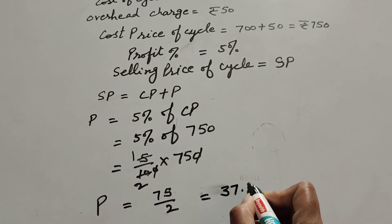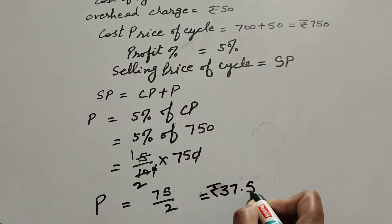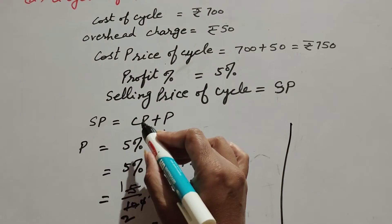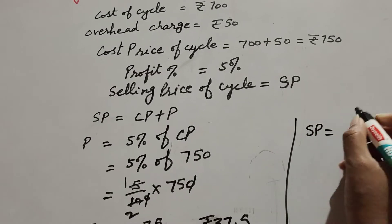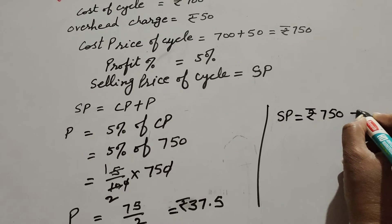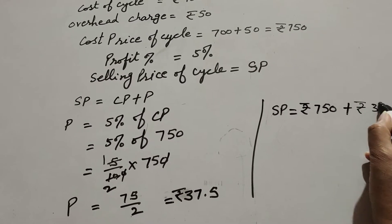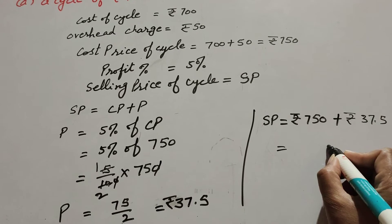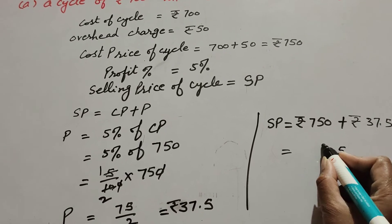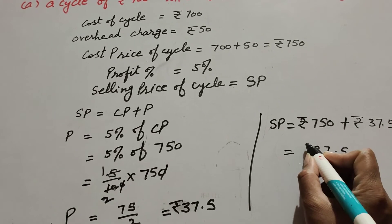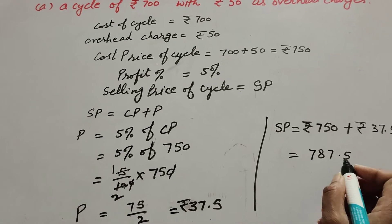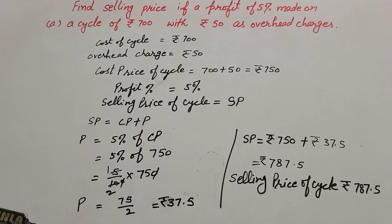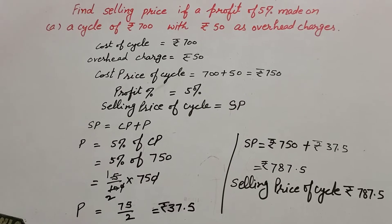So profit is equal to 75 divided by 2, which is equal to 37.5. He gets a profit of rupees 37.5. Now we find the selling price: SP is equal to cost price plus profit, so SP equals 750 plus 37.5. We get the answer rupees 787.5. So the selling price of the cycle is equal to rupees 787.5.